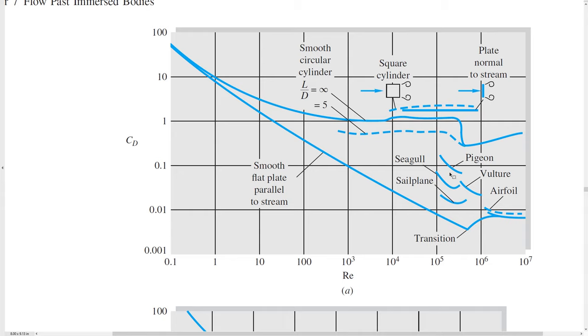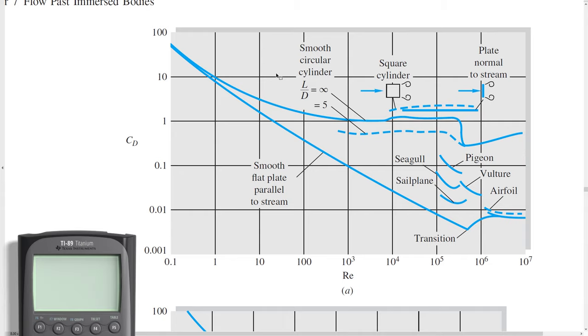So I would say anything greater than 2, maybe 3 times 10 to the 5th is going to be turbulent. Anything less than 10 to the 4th is definitely laminar. Anything between the two is transitioning from laminar to turbulent. Our Reynolds number was 8.9 times 10 to the 5th, which is going to be closer to 10 to the 6th, especially considering that this is a logarithmic scale. Therefore, I will confidently say this is turbulent flow.